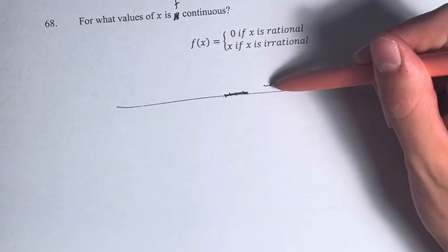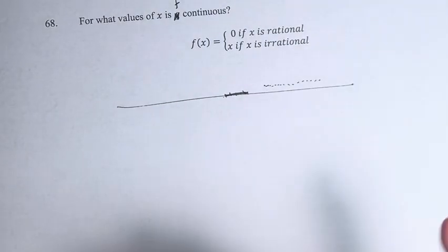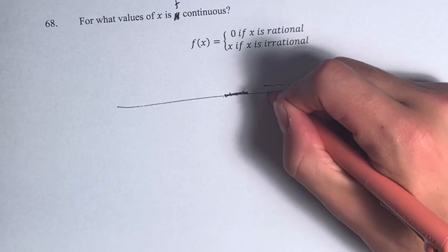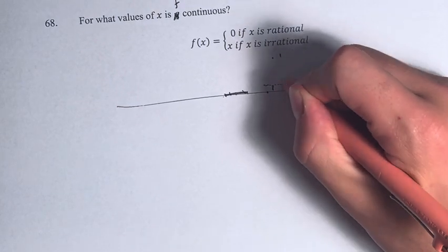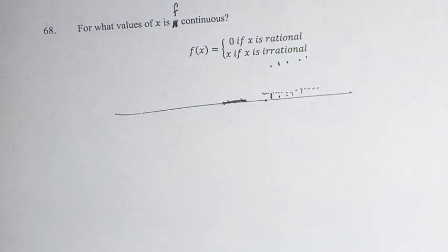Meaning the value of the function is going to be jumping between 0 and x infinitely many times, back and forth, in a way that doesn't even really make sense in the way we typically think about numbers.